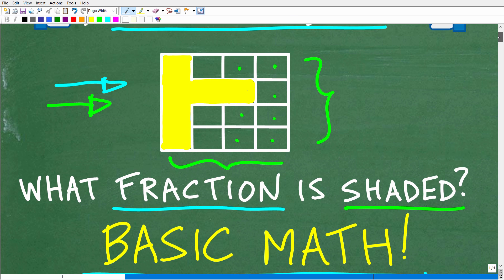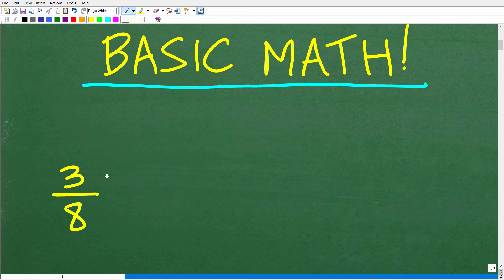Okay, so one more time, you'll want to write a fraction that represents how much of this box is shaded. Let's go ahead and take a look at the right answer. The correct answer is three-eighths. All right, now how did you do?